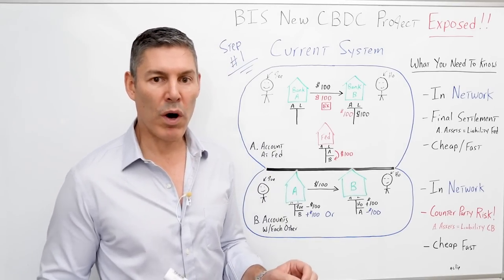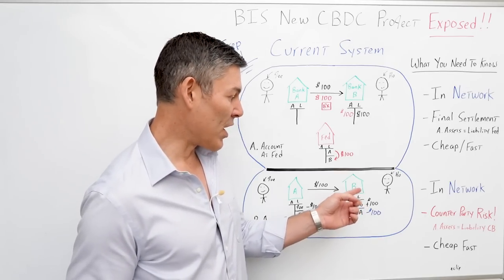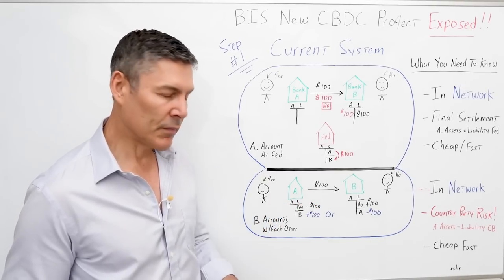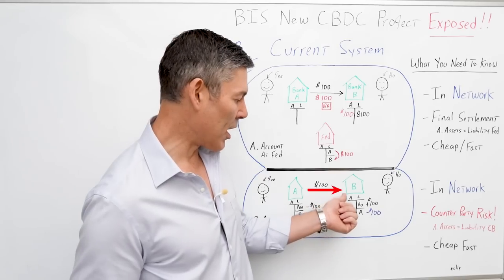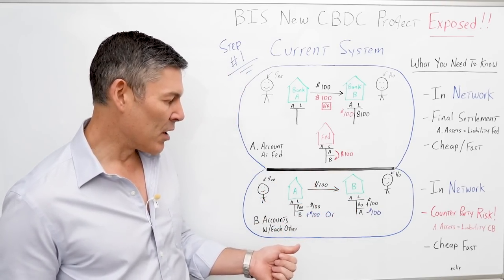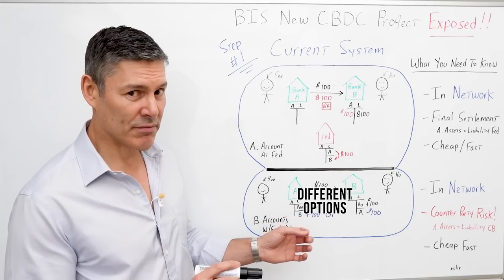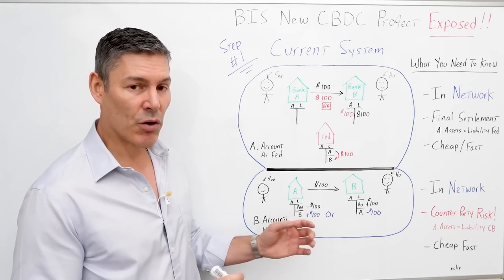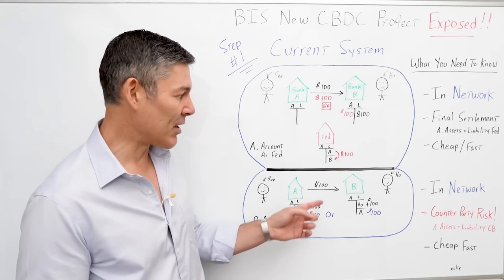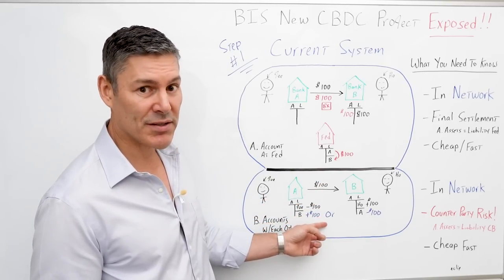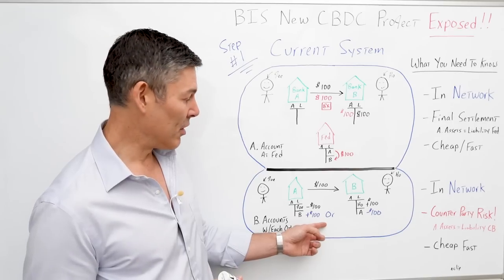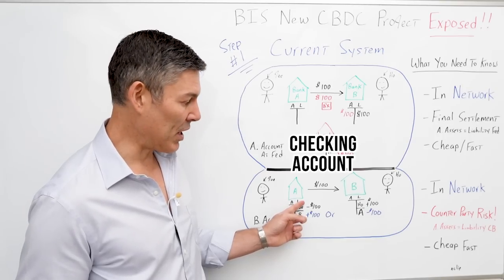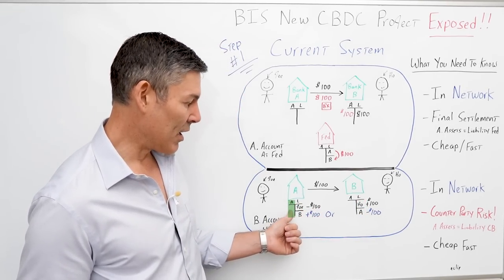Now let's assume one of the banks doesn't have an account with the Fed, but they trust one another — they have an account with each other — therefore they are in the same network. Bank A is going to transfer that $100 liability over to Bank B, just like in the first example. But this time they've got a few different options because the Fed isn't involved — now they're settling on their own balance sheets. So Bank A has a checking account with Bank B, which is a liability of Bank B and an asset of Bank A, and vice versa.